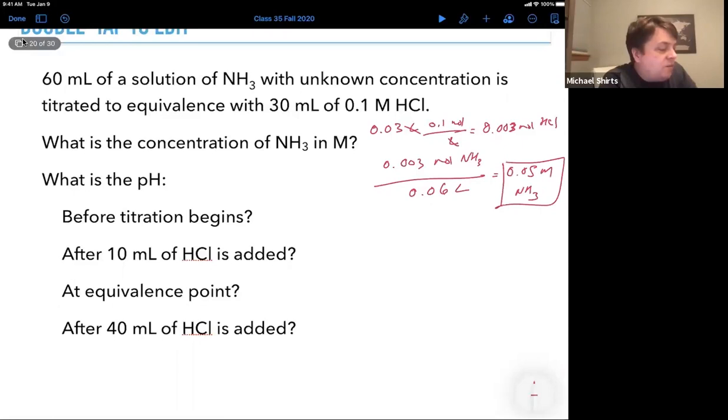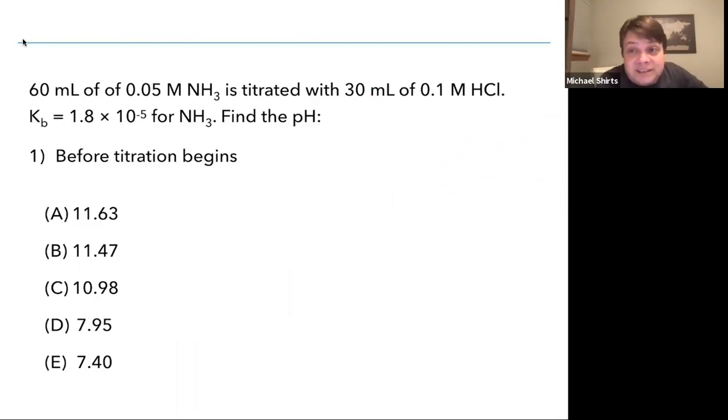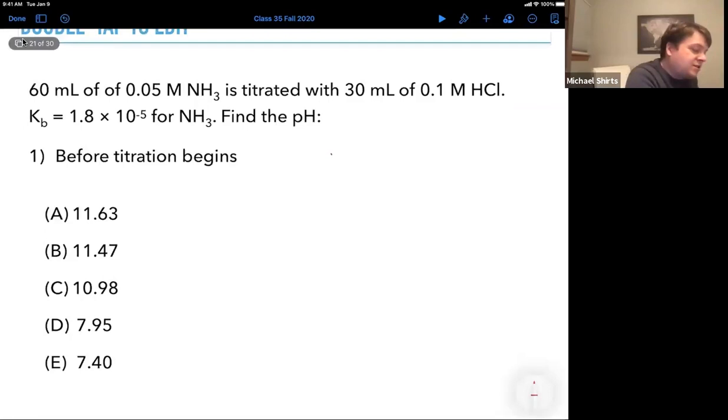What's the concentration? It's in 60 milliliters, so divide by 0.06 liters, and that gives us 0.05 molar NH₃. We've got the concentration of the ammonia, and now we'll be able to figure out the pH before the titration begins, after 10 mL of HCl is added, at the equivalence point, and after 40 mL of HCl is added. What you should do is try to figure this out yourself. I would pause and see if you can work this problem out.